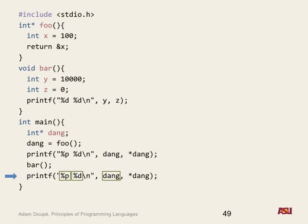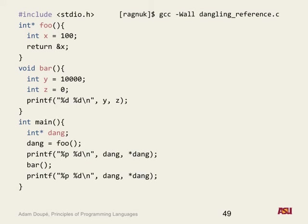What would actually happen? Well, you called bar, so theoretically it should still print the same thing — but now it's looking at whatever memory y and z hold. You can probably use Bayesian reasoning: I'd probably be showing you an example where something interesting happens. What happens when we compile this? Does it compile? Yes. Are there errors? No, but it will give a warning.